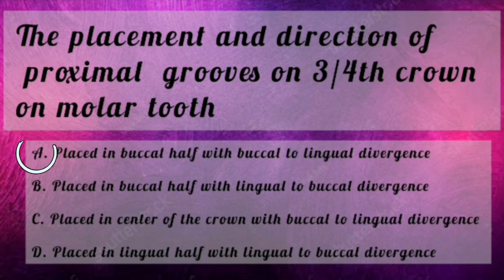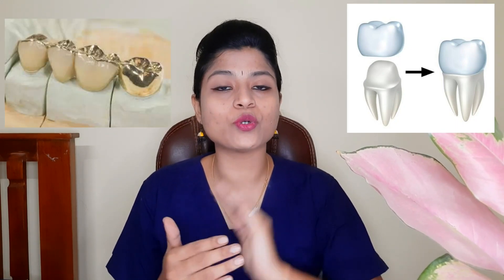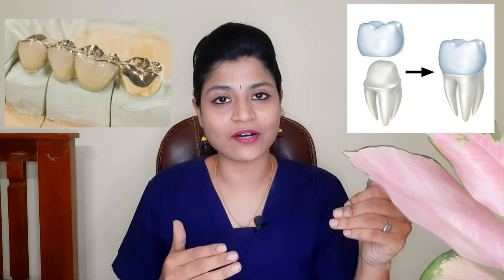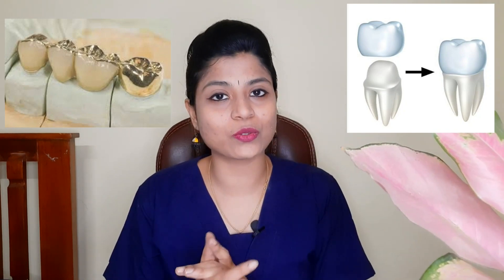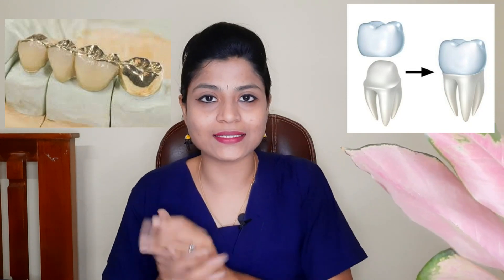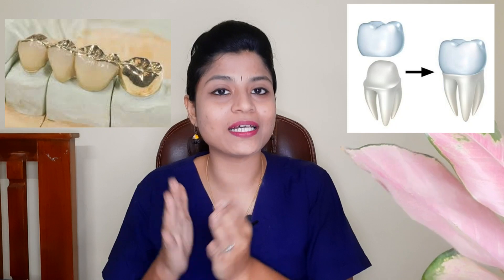What is the three-fourth crown, reverse three-fourth crown, and seven-eighths crown? All these are partial crowns involving a limited area of the tooth crown. For a whole crown preparation we involve all walls along with the occlusal surface, but for a three-fourth crown we reduce only the lingual surface, the proximal surface, and half of the occlusal surface, leaving the buccal side undisturbed.